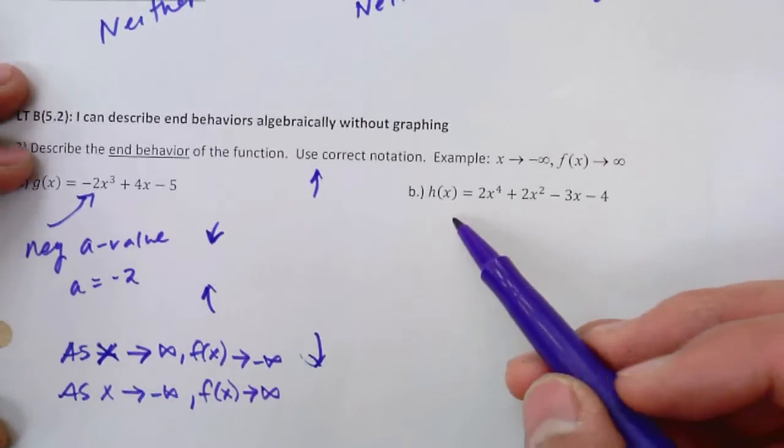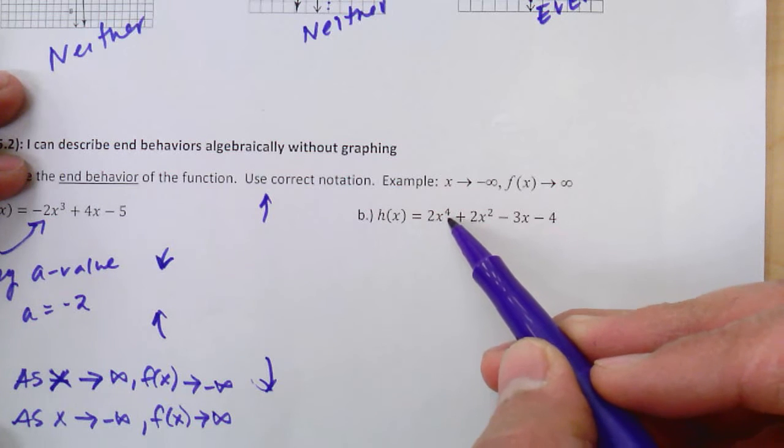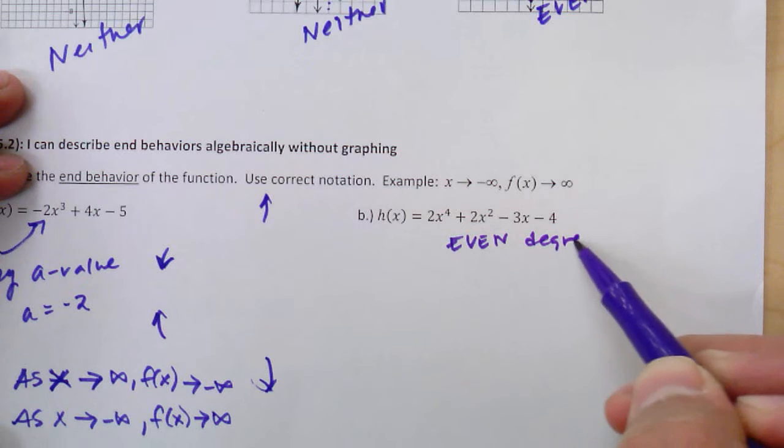Okay, so this next one, part b, if I'm looking at part b, the degree of this polynomial is a fourth degree. It's an even degree polynomial.